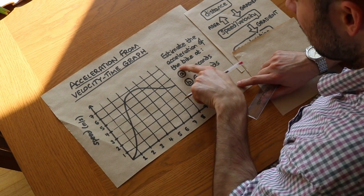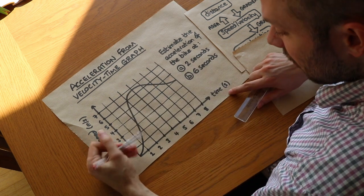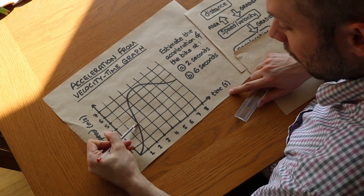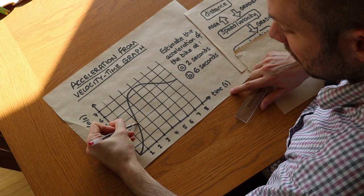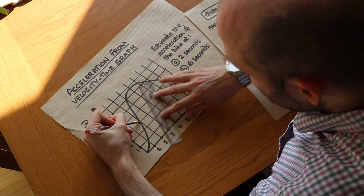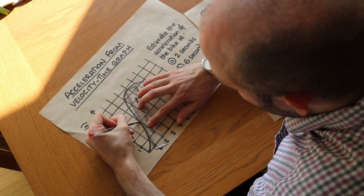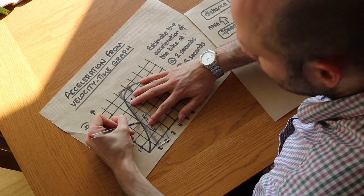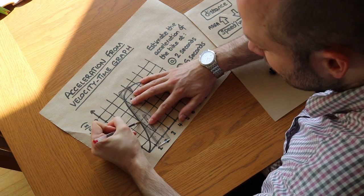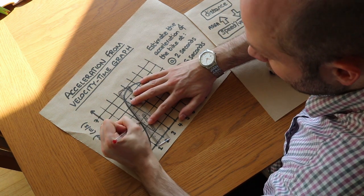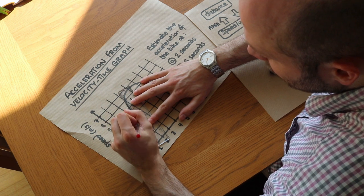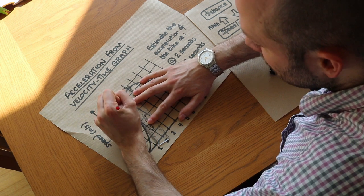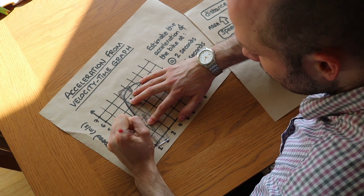So we want to find the gradient at 2 seconds. So 2 seconds is here, and we want to find the gradient of the steepness of the graph at this particular point. So what we do is we get our ruler, and we put the ruler such that the steepness of the ruler is the same as the steepness of the graph at this particular point. So can you see that it's roughly straight here, and then what we do is we draw this line here.